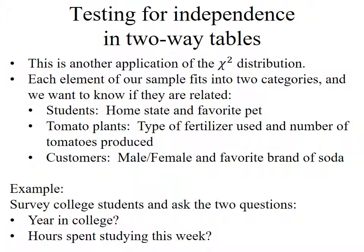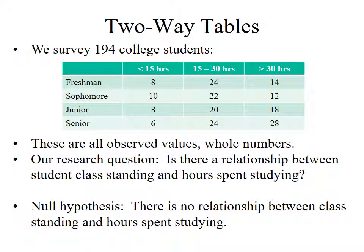Let's work through a specific example. Suppose I survey college students and ask two questions: what year are you in college, and how many hours did you spend studying this past week? We find that asking about a specific week gives more accurate data than asking people to estimate a typical week. Suppose I survey 194 college students and bin the hours into three categories: less than 15 hours, 15 to 30 hours, or more than 30 hours. Here's a table where every person fits into one of 12 categories — four class levels (freshman, sophomore, junior, senior) and three studying categories. Adding up all 12 categories gives a total of 194 students. Note that observed values must all be whole numbers.